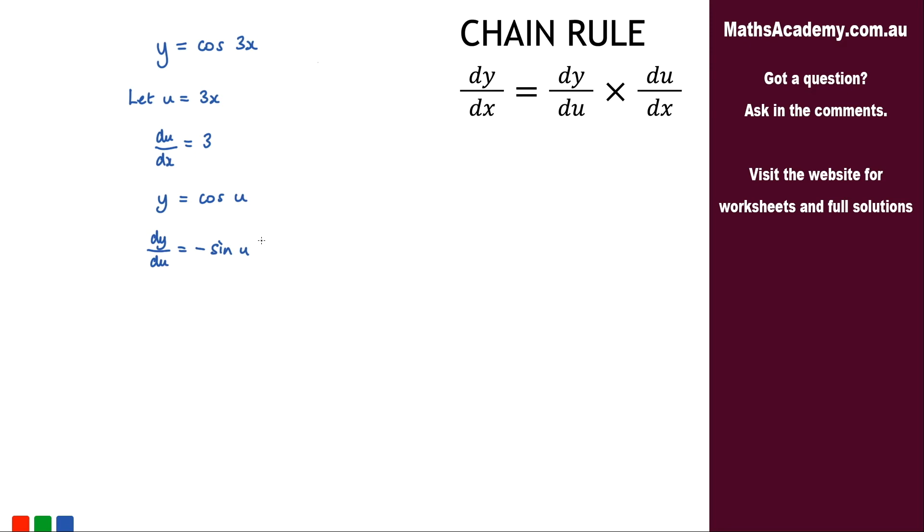Now we can apply the chain rule. So dy by dx we know is dy by du multiplied by du by dx.